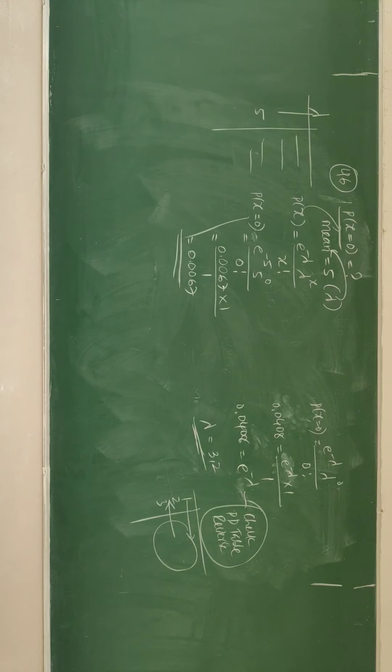Question number 43 is like that: write the recurrence formula for successive probabilities in a Poisson distribution. As in the last video, the recurrence relation formula — they are asking the recurrence relation formula. Recurrence relation formula is like this: P(x) equal to lambda by x, into P(x minus 1). This was the answer for question number 43.